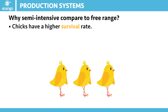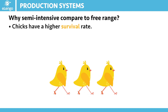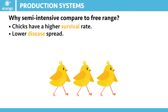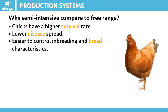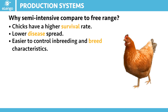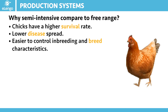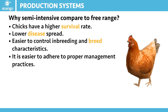First, the survival rates for chicks are higher than when using the free range system. The disease spread will also be more manageable. We are able to control inbreeding and the breed characteristics. The advantage of this is that the management aspects allow us to do a cleaner system — we are able to feed the birds, supplement their diet, and vaccinate them, so overall things are getting better compared to the free range system.